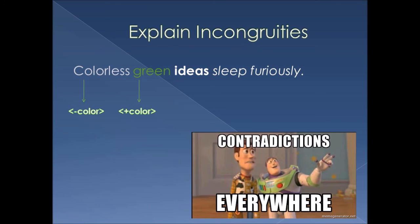Green is also used to describe ideas. Green is concrete — concrete is something you can see — but ideas are abstract; you cannot feel them. So using the concrete word 'green' to describe the abstract word 'ideas' is another contradiction in the same sentence.